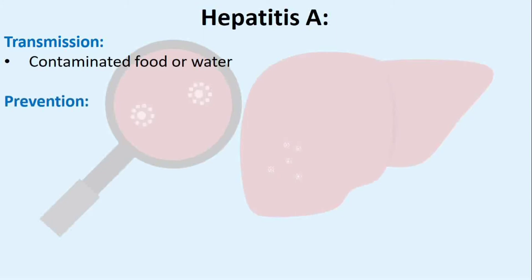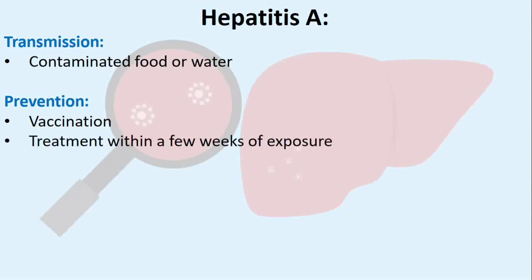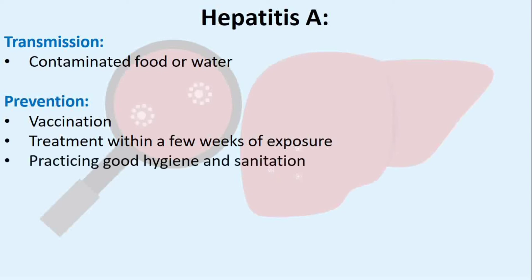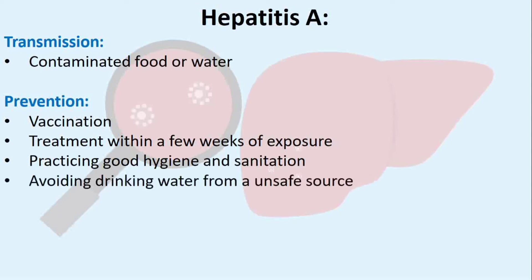Prevention: There is a vaccination for hepatitis A. Treatment within a few weeks of exposure to the virus can also bring short-term immunity. You can reduce the risk of exposure by practicing good hygiene and sanitation, and avoiding drinking water that has come from a potentially unsafe source.